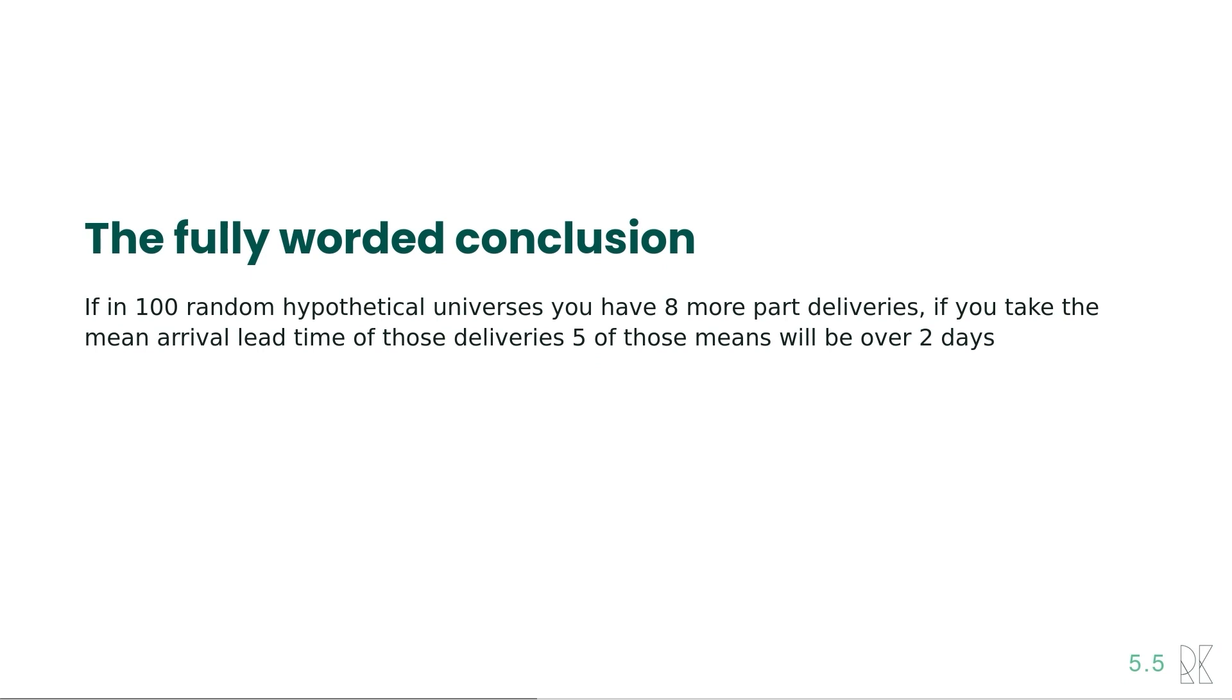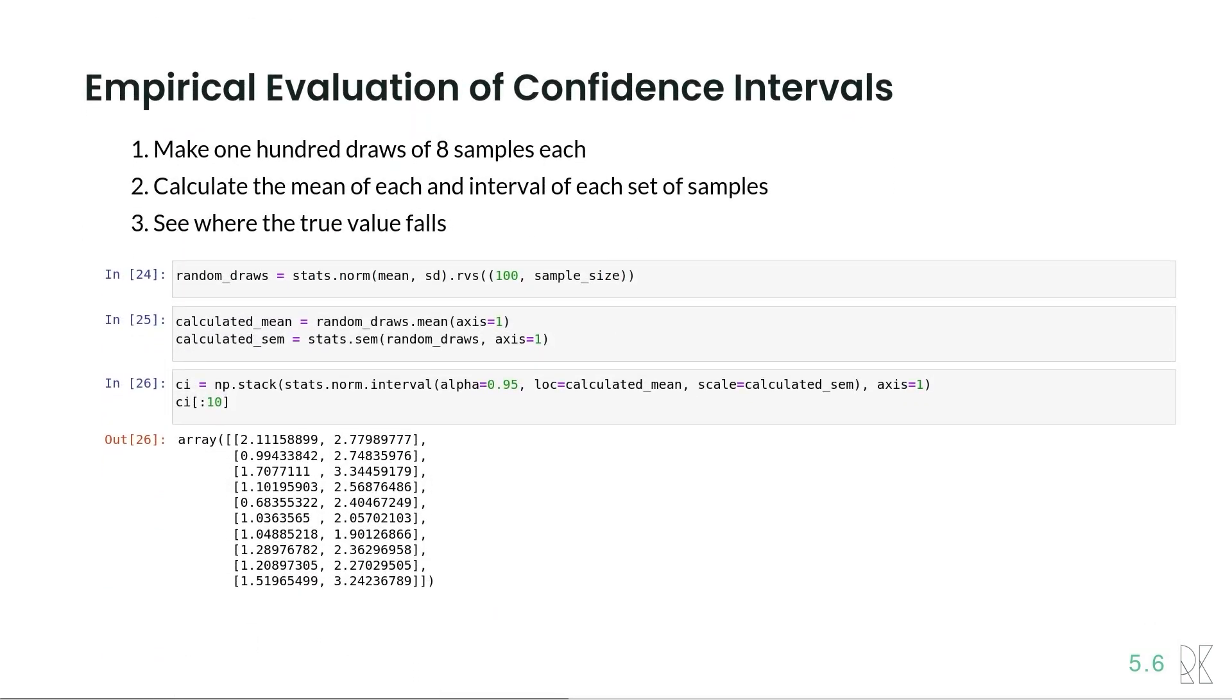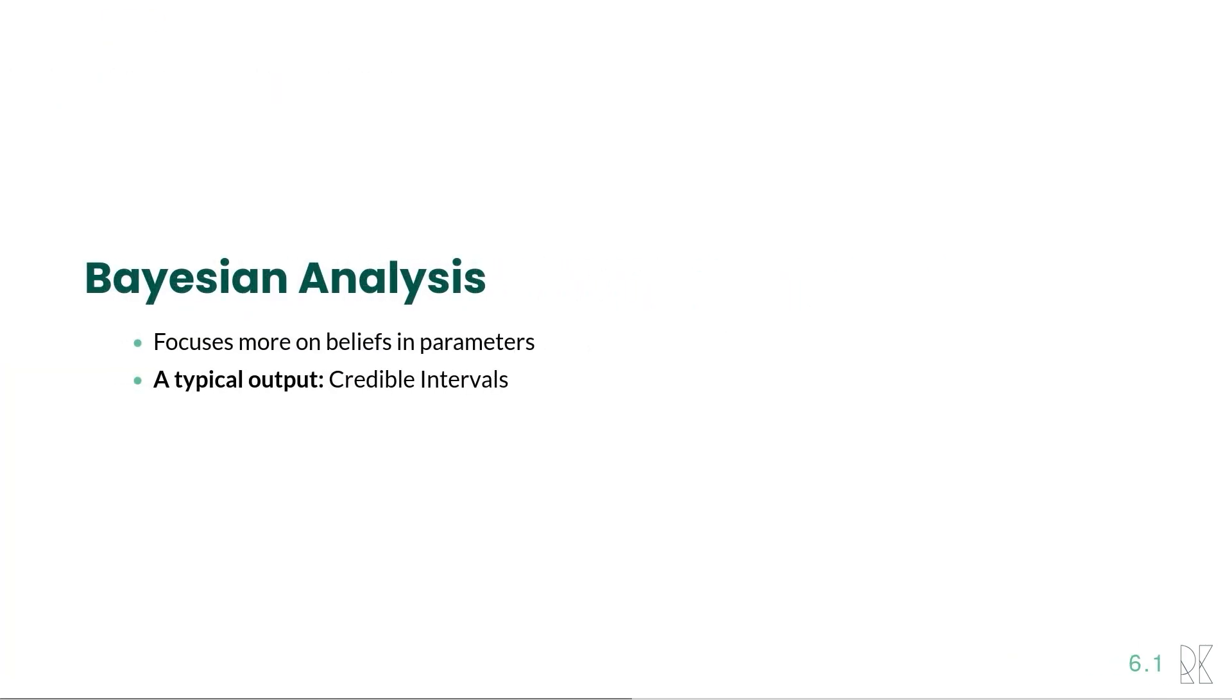This conclusion, as it would be fully worded, is that if we had 100 hypothetical universes where we had eight more part deliveries, what would the mean lead time of those arrivals be? And specifically, what would the range be where five of those means would be over two days? It's quite a mouthful, but that is the conclusion of a confidence interval. And that would be it if that was our analysis. Now here is a set of slides that shows you how we can empirically simulate this by simulating 100 hypothetical universes and calculating the confidence interval for each, and then plotting those in this plot here. But let's move on to the Bayesian analysis, so I can tell you a little bit about that.